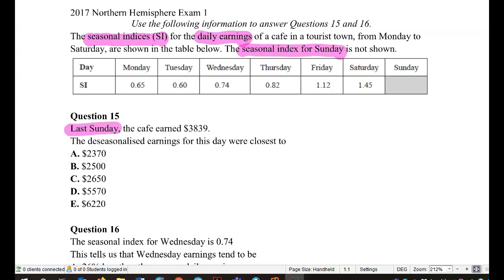Last Sunday, the cafe earned $3,839. The de-seasonalized earnings for this day is closest to. Okay, so let's go through this and what do we have to do? So I need to figure out what that seasonal index for Sunday is.